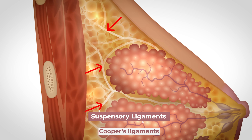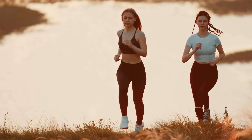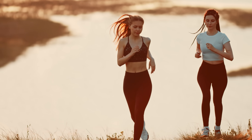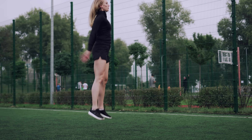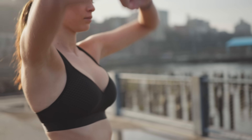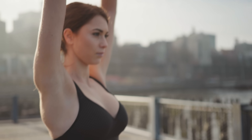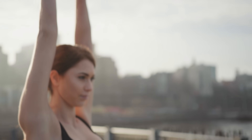These ligaments become looser with age, which contributes to sagging of the breasts as a female gets older. They can also become looser with excessive strain that could occur with long-term jogging or other high-impact activities, and this is why wearing a sports bra can help to maintain the integrity of these ligaments.